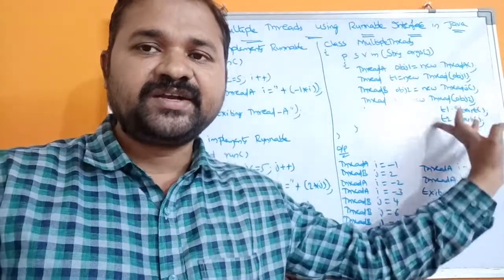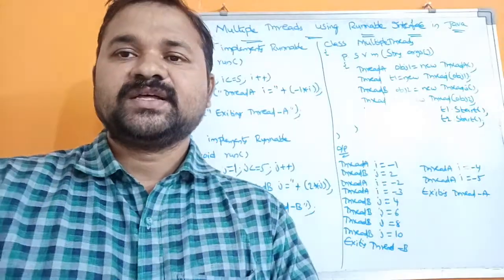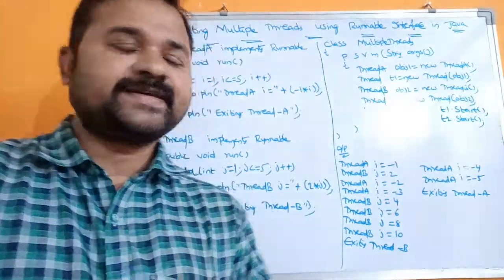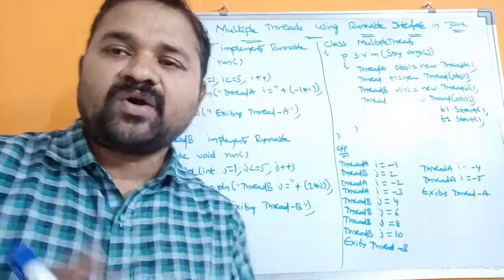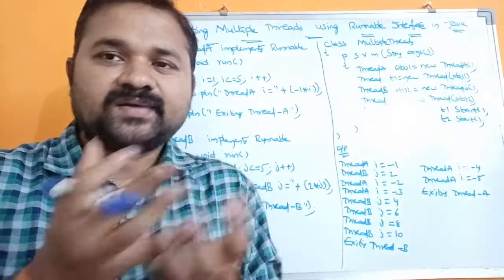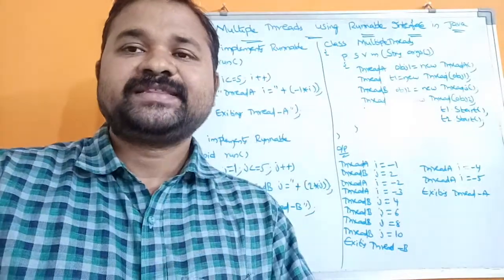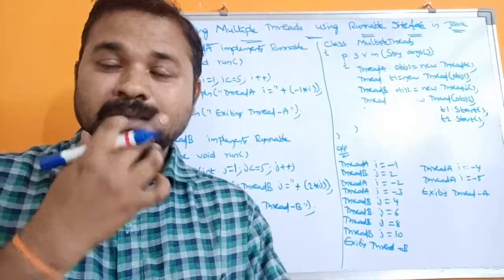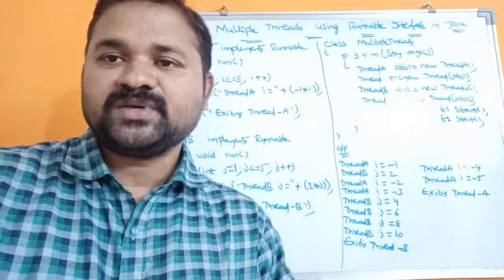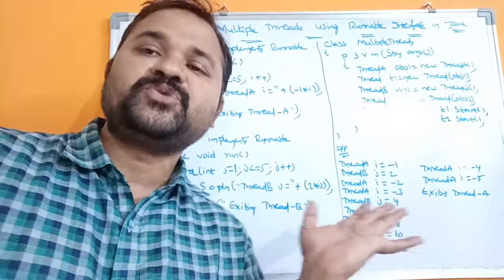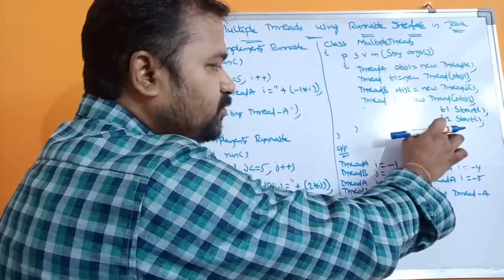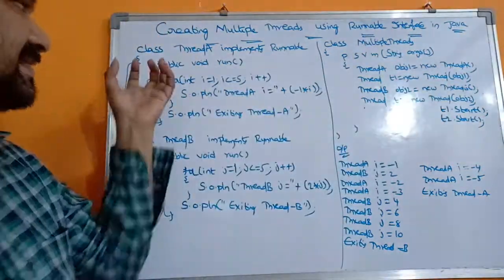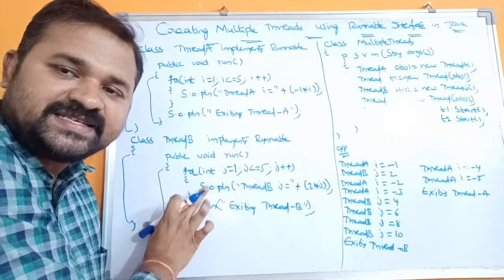t1.start() and t2.start(). Whenever the start method is called, the thread scheduler checks whether the CPU is free or not. If the CPU is free, the thread scheduler allocates the CPU to one of the threads. We don't know in which order the two threads will be executed — it depends on the thread scheduler. The scheduler may execute t1 first, t2 first, or both simultaneously.